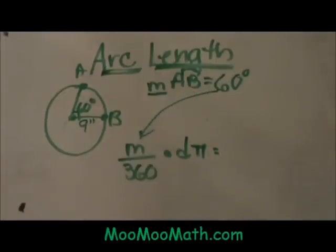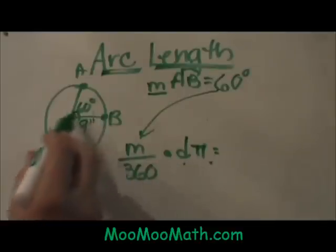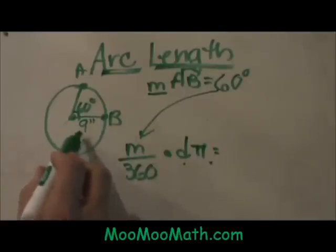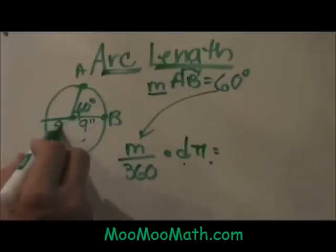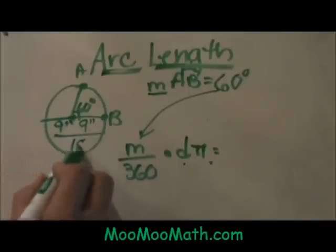Since this is a fraction of the circumference, dπ is in our formula and d is for diameter. Since our radius is 9, that means our diameter would add up to be 18 inches.